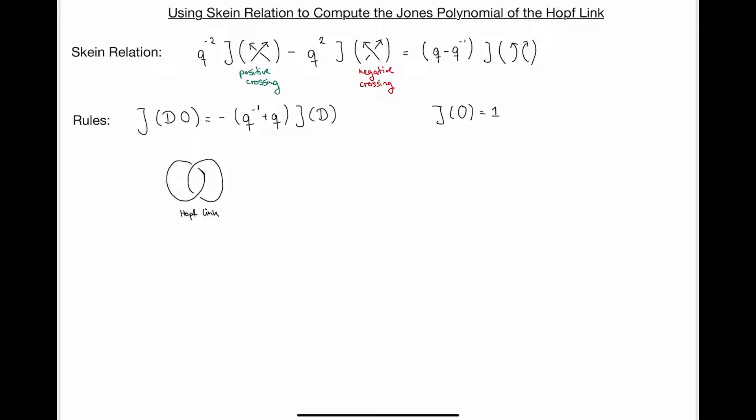And we're also going to use the following rules: that the Jones polynomial of a knot with the unknot, I can pull out the unknot via q minus q inverse plus q, and that the Jones polynomial of the unknot is just 1.